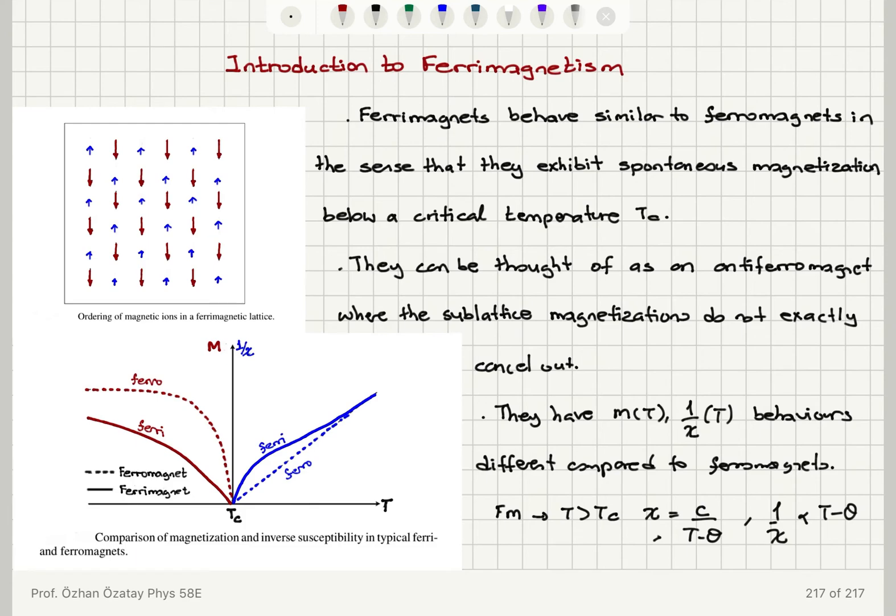So we have introduced ferrimagnetism. Ferrimagnetic materials consist of two spin sublattices where the magnetizations point in opposite directions but with an incomplete cancellation. They have spontaneous magnetization below a critical temperature Tc and they have a different behavior compared to ferromagnets in magnetization and 1 over chi as a function of temperature.